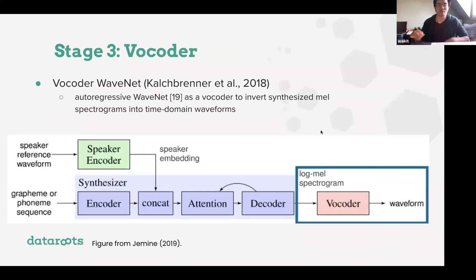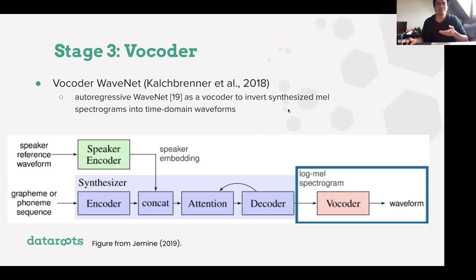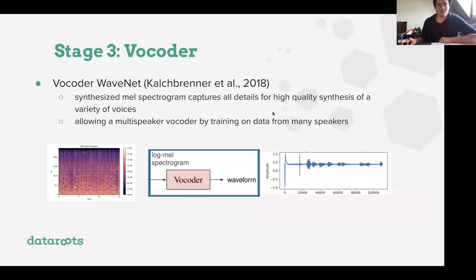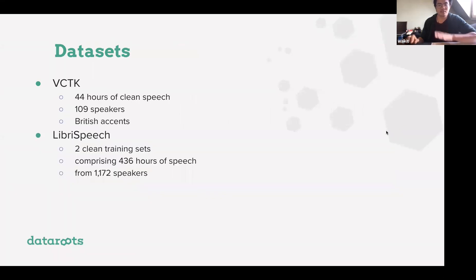After the MEL spectrograms are generated, these are given to a vocoder. The vocoder generates the waveform — it inverts the synthesized MEL spectrogram into time domain waveforms which we can understand and hear. The MEL spectrogram captures the entire variety of a voice and is capable of simulating different speakers. The datasets used to train this model are VCTK, which consists of 44 hours of speech from approximately 100 speakers, and LibreSpeech, which comprises 430 hours with 1.1k speakers.